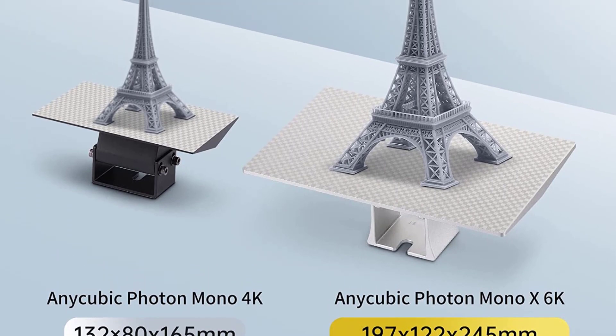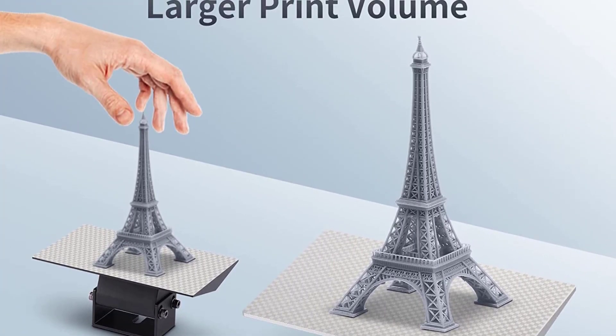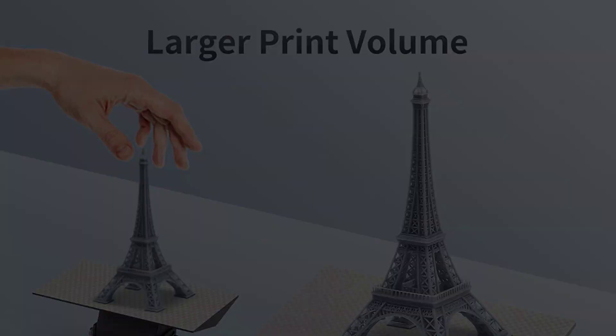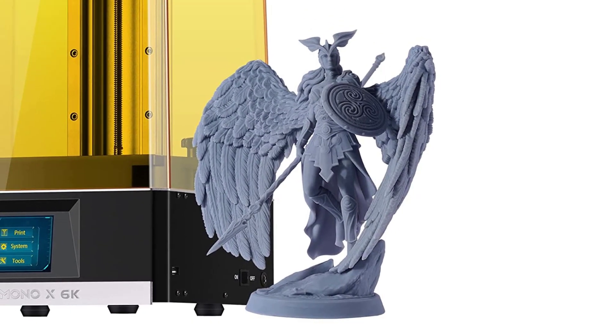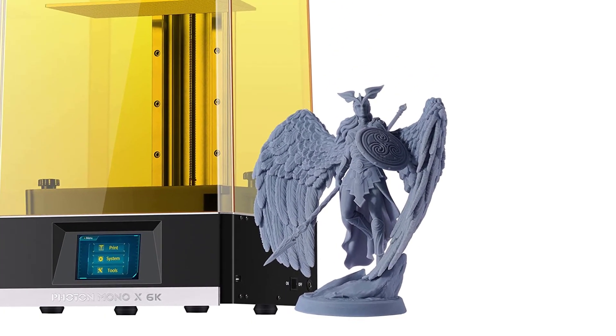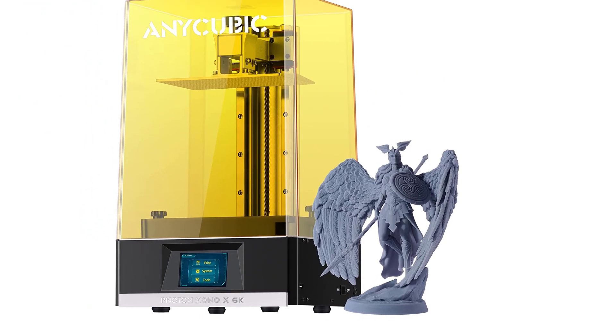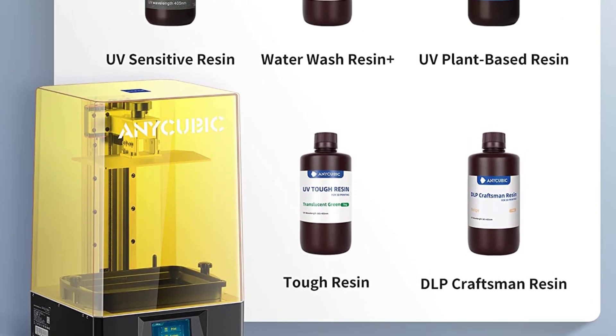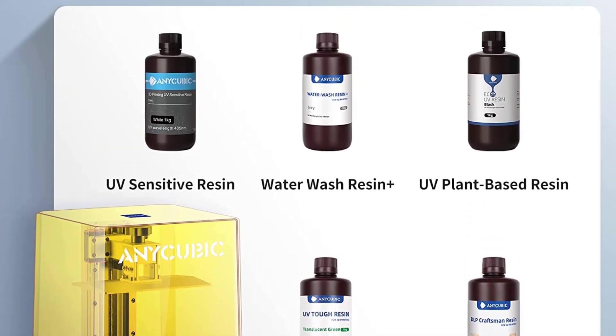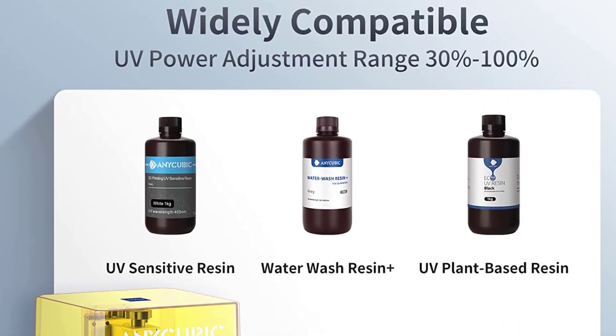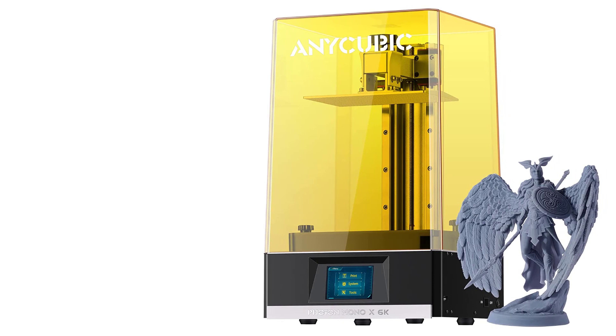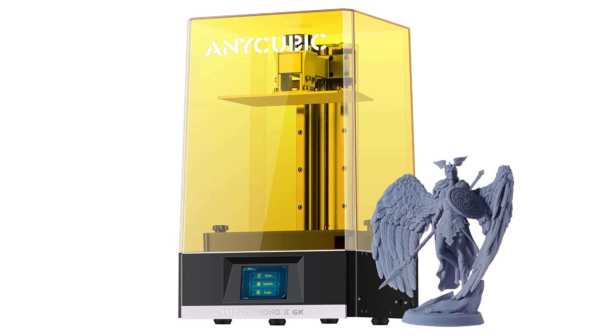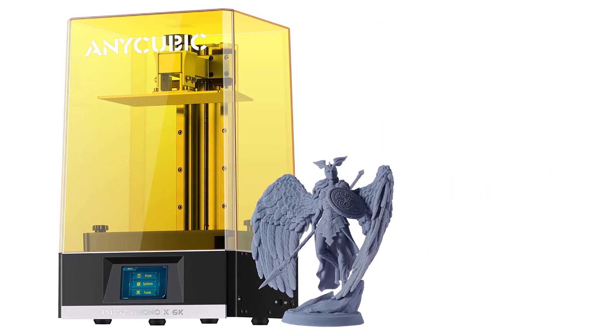The max printing speed of Anycubic Photon Mono X 6K 3D printer is 3.15 inches per hour. With a 6% light transmittance screen, the fastest printing speed can reach 1 second per layer, saving you half of the time than other regular resin 3D printer and reduces costs. The UV lamp power adjustment range is 30% to 100%, which can support the use of more types of resin printing materials. In addition, adjusting the light power appropriately can extend the lifespan of both the screen and light significantly.